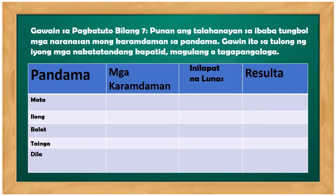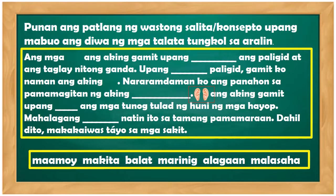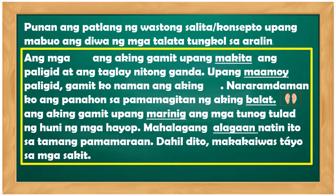Gawain bilang pitong punan ang talaan tungkol sa mga naranasan mong karamdaman sa pandama. Gawin ito sa tulong ng iyong nakatatandang kapatid, magulang, o tagapangalaga. Ilalagay mo lang kung anong naramdaman mo sa mata, ilong, balat, tainga, dila. Ano ang binigay na lunas? Anong naging resulta nang bigyan ka ng pangunang lunas o lunas sa iyong naramdaman? Punan ng patlang ang wastong salita o konsepto upang mabuo ang talata tungkol sa aralin — ang mga sagot ay: maamoy, balat, marinig, alagaan.